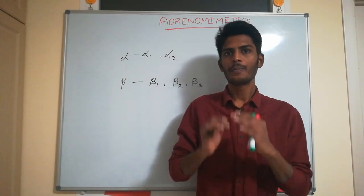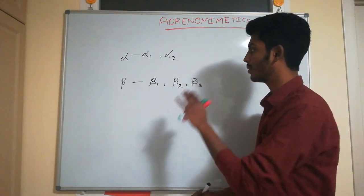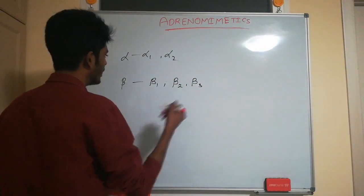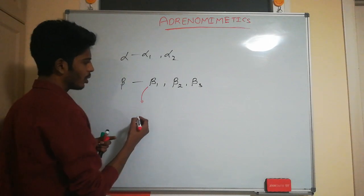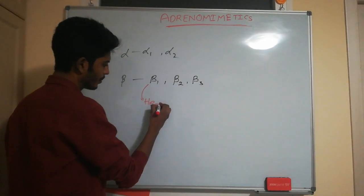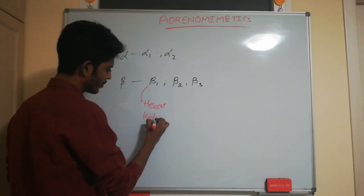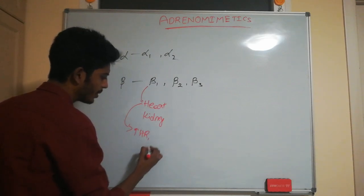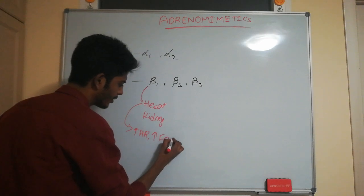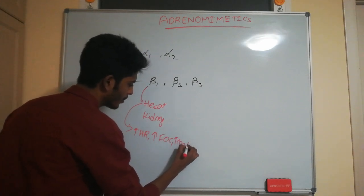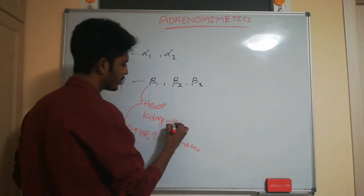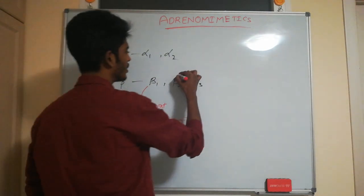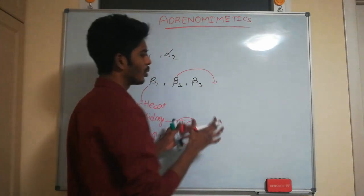Beta 1 receptors are located in the heart and kidney. When the heart is stimulated, it increases heart rate, force of contraction, and conduction. When talking about the kidney, beta 1 stimulation activates the juxtaglomerular apparatus and increases blood pressure.